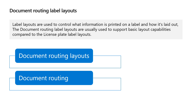In this session, we will review the process and required configurations for managing license plate printing using the document routing layouts. We will learn how to define the label layout by configuring the document routing layouts, how to specify the order types that trigger the label printing, and how to set selection criteria from the available layouts using the document routing.